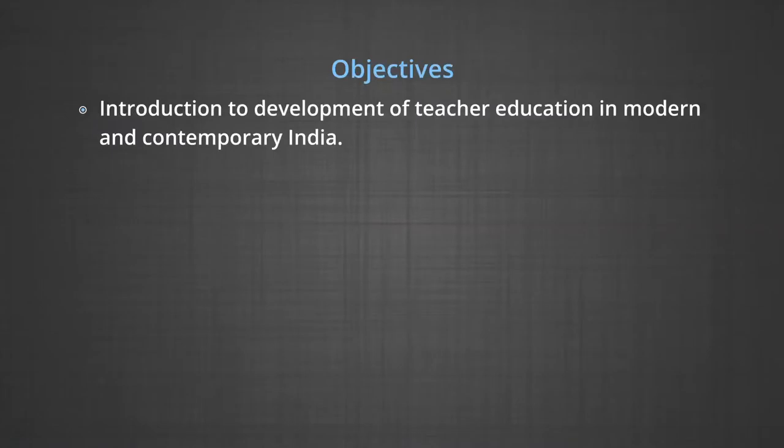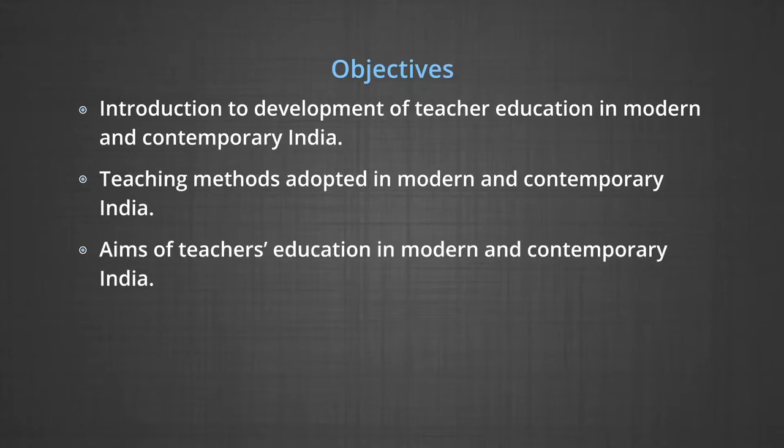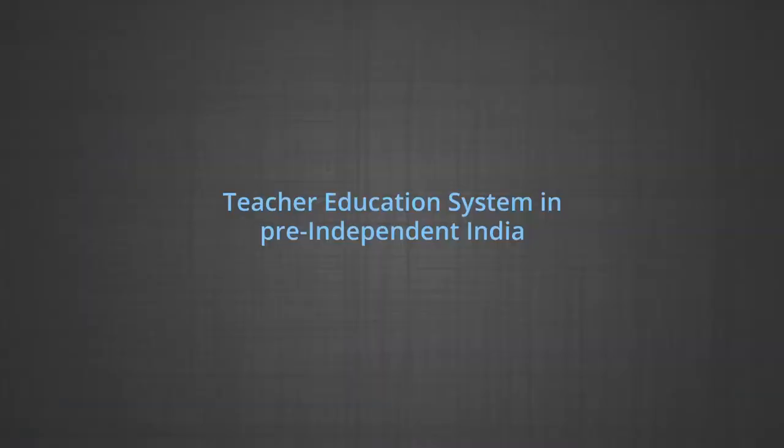This module is on the Scenario of Teacher Education in Modern and Contemporary India. The objectives include an introduction to the development of teacher education, teaching methods adopted, and aims of teacher education in Modern and Contemporary India. Teacher education in Modern India can be divided into two periods: the Pre-independence (British) period and the Post-independence period. We will first examine the teacher education system in Pre-independent India.